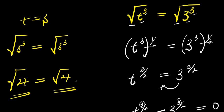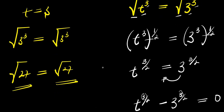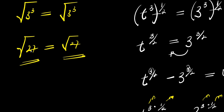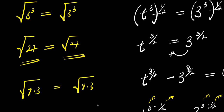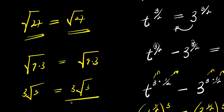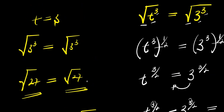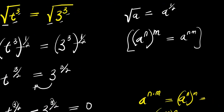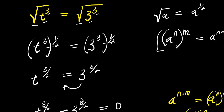You can also express this as: twenty-seven is simply nine times three, so square root of twenty-seven is square root of nine times three, and square root of nine is three, giving three root three equals three root three. Mathematics is just playing around with numbers — thank you, guys.